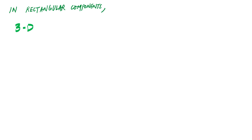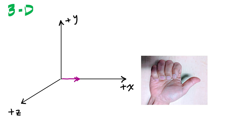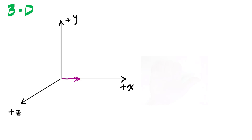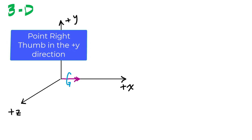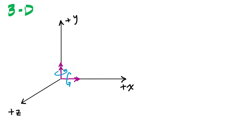In rectangular components in 3D, I use an XYZ reference. Positive moments have double-headed arrows pointing in the positive X, positive Y, and positive Z directions. Pointing my thumb in the positive X direction and curling my fingers gives the direction of rotation. The same applies in the Y and Z directions.